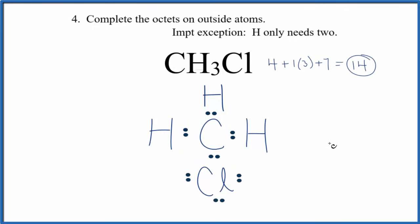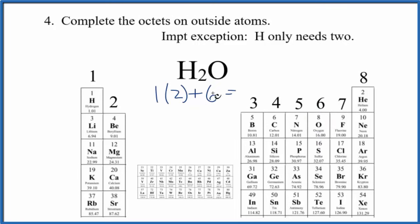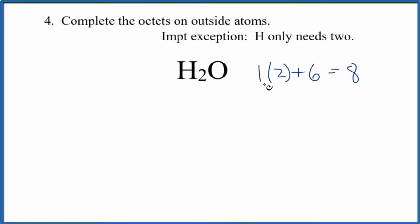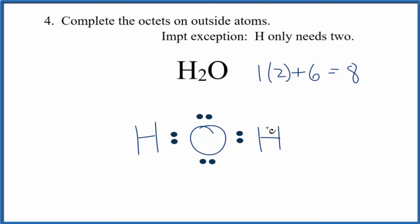Pause and write the Lewis structure for H2O. Hydrogen has 1 valence electron and we have 2 hydrogen atoms, plus oxygen in group 16 has 6 valence electrons — giving a total of 8 valence electrons for H2O. Since hydrogen always goes on the outside, we put oxygen in the center with the hydrogens on the outside. We place a pair of electrons between each hydrogen and oxygen to form the covalent bonds — that's 4 used, 2 remaining. We put the remaining 2 on the oxygen, giving it an octet. This is the Lewis structure for H2O.